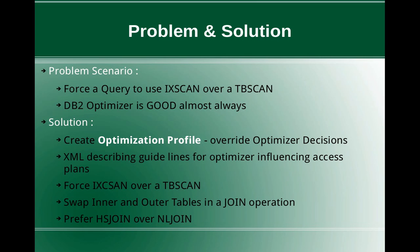Certain operations you can perform include: forcing an index scan over a table scan; swapping the inner and outer tables in a join operation — for example, when joining tables T1 and T2, you can make a particular table the inner table and another the outer table. You can also influence the type of join — like preferring a hash join instead of a nested loop join. So like that you can override the access plan or the optimizer decisions.